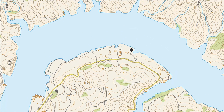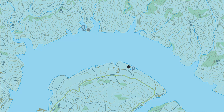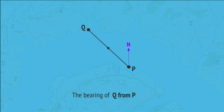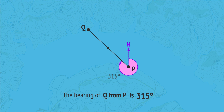Looking at another example, if we're located at P and want to give the direction towards Q as a bearing — that is, the bearing of Q from P — then we measure this angle, giving the bearing of Q from P as 315 degrees.